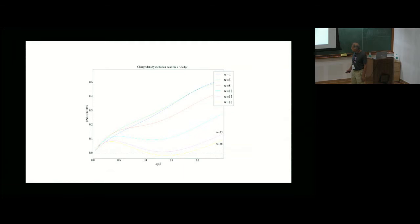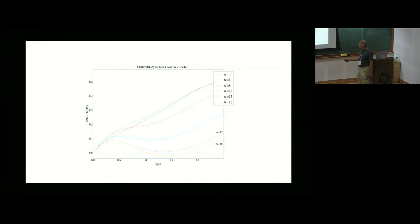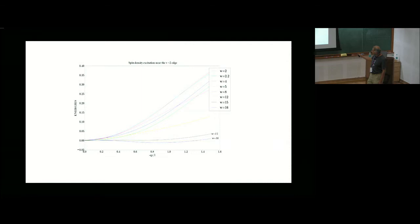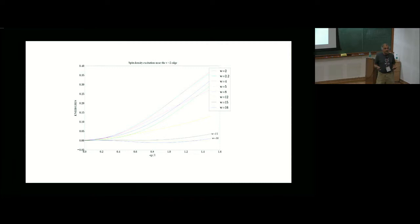Let me show you some pictures. For W equals 15 the charge density excitation is about to touch zero, and at W equals 16 it goes below. Somewhere between W equals 15 and 16, the charge density excitation becomes unstable. The spin density is even more striking: it starts out reasonably, then as you increase W it becomes extremely flat. At W equals 15 it is just about to touch zero, and at W equals 16 it goes below. Again, somewhere between W equals 15 and 16, this also becomes unstable, breaking translation symmetry along the edge direction.